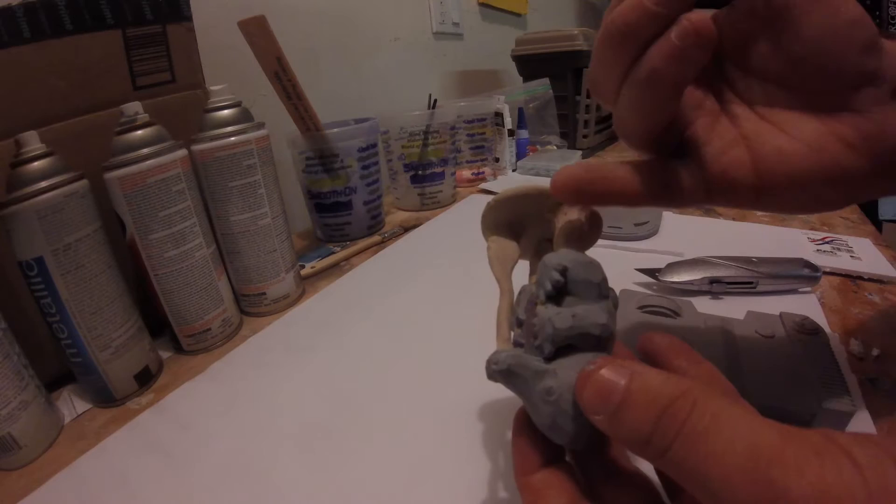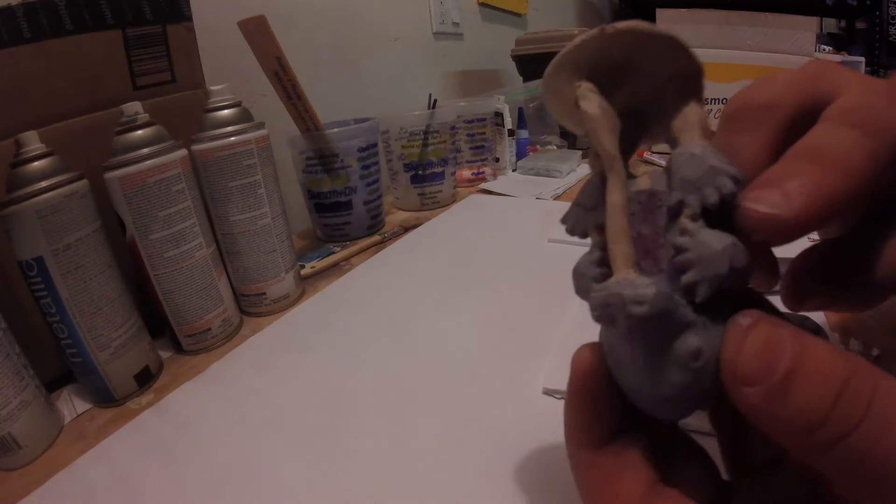Next, I'm going to make a two-part mold of the character. I've added clay to create sprues so that air bubbles don't get trapped in things like the fingers or the bottom of the bill.